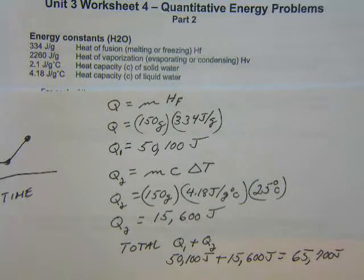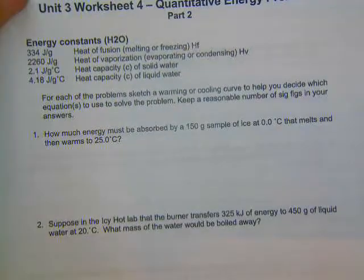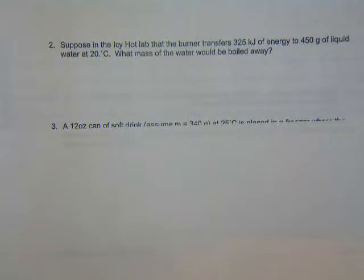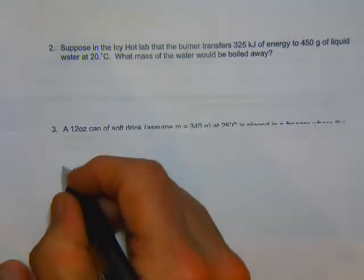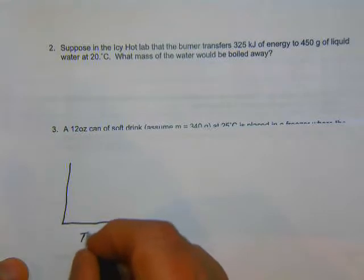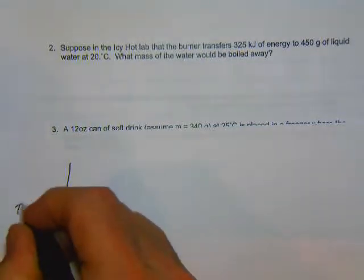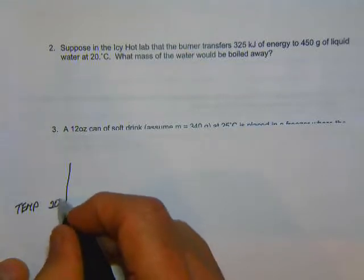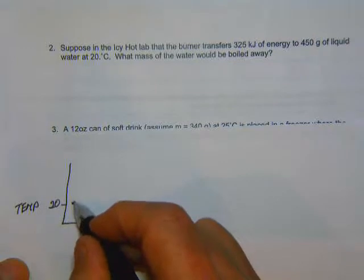That's our answer for problem number one. Let's look at problem number two. Suppose in the icy hot lab the burner transfers 325 kilojoules of energy to 450 grams of liquid water at 20 degrees. What mass of the water would be boiled away? Again, let's do a little graph. We have time and temperature. We've got some water at 20 degrees and we know it's going to go up to 100.